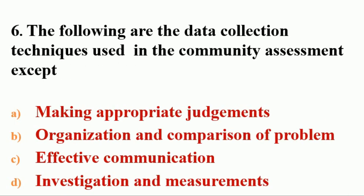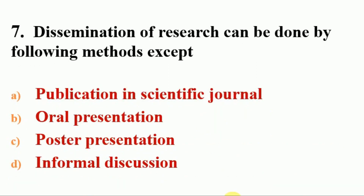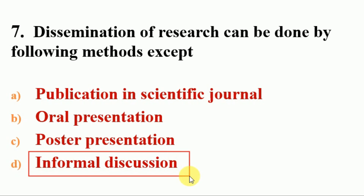Next question: the following are data collection techniques used in community assessment except — options: A. making appropriate judgments, B. organization and comparison of problems, C. effective communication, D. investigation and measurements. The answer is B, organization and comparison of problems. Next question: dissemination of research can be done by the following methods except — options: A. publication in a scientific journal, B. oral presentation, C. poster presentation, D. informal discussion. The answer is D, informal discussion. The rest of the methods can be used for dissemination of research.